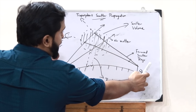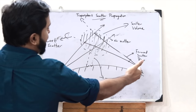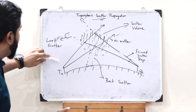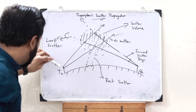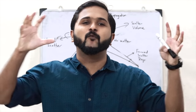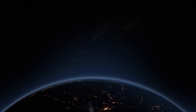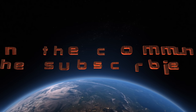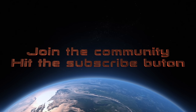In tropospheric scatter propagation, two antennas on both ends are aimed at a fixed set point in the troposphere to receive the scattered signal. Therefore, electromagnetic radio waves are generated by high-power transmitters with very high gain directive antennas. That briefly sums up tropospheric scatter propagation. We'll be discussing further topics in upcoming videos — stay tuned and thank you.